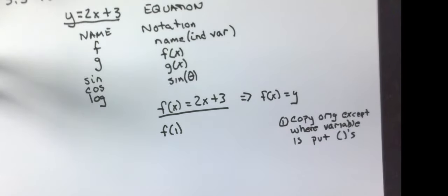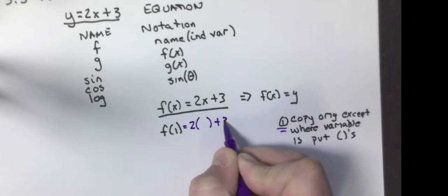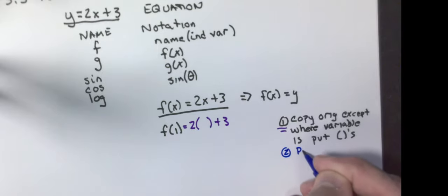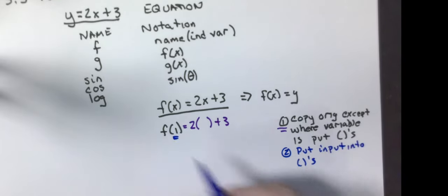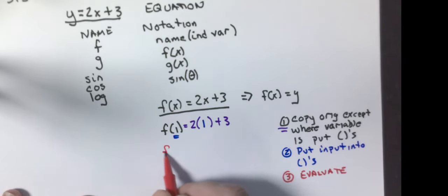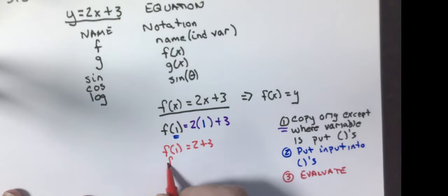And I'm going to do this one in the purple. So I'm going to put parentheses where the x is. And then step two is to put the input into the parentheses. So there's my input. I'm going to put the one in the parentheses. And then we are going to evaluate it. So f of 1 is equal to 2 times 1, which is 2. Then I get 2 plus 3, which is 5.